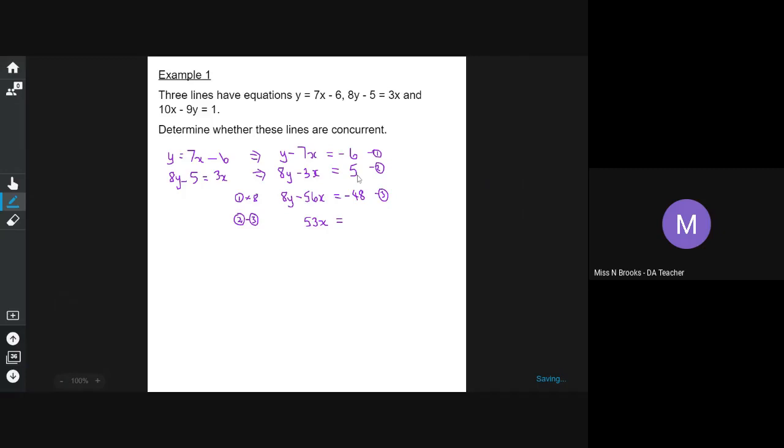And we've got 5, and we're taking away negative 48, and that's going to give us positive 53. And so dividing both sides by 53 gives us x equals 1.